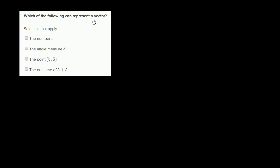Which of the following can represent a vector? A vector is something that has both a magnitude and a direction. So let's see which of these could represent something that has a magnitude and a direction.